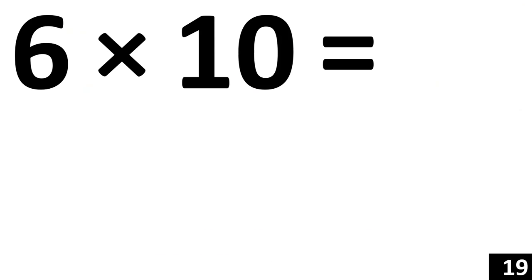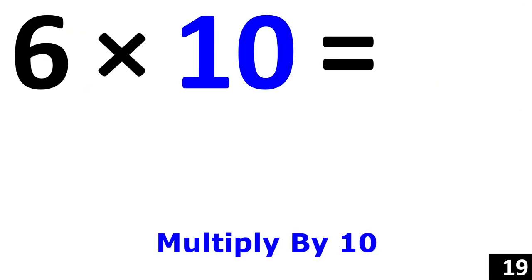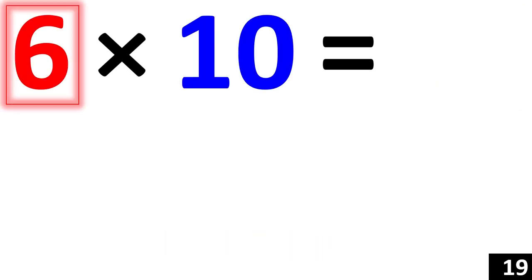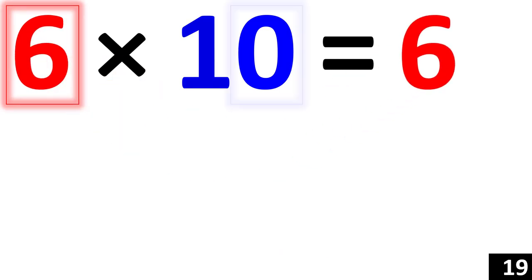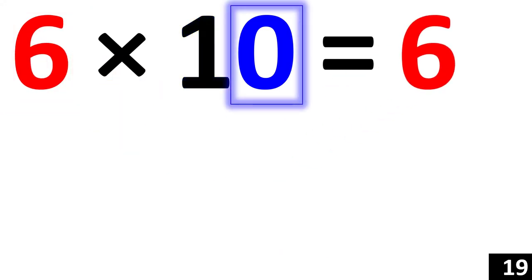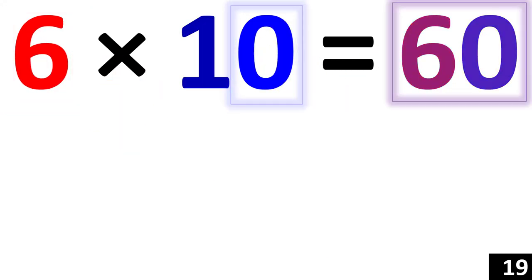For 6 times 10, we just use the rule of 10. 6 times 10 is a 6 with an added 0, so 60.